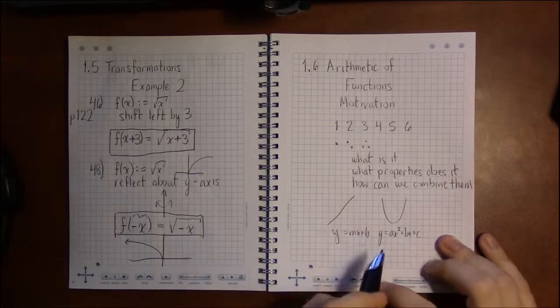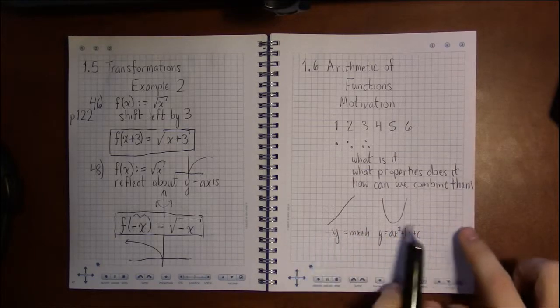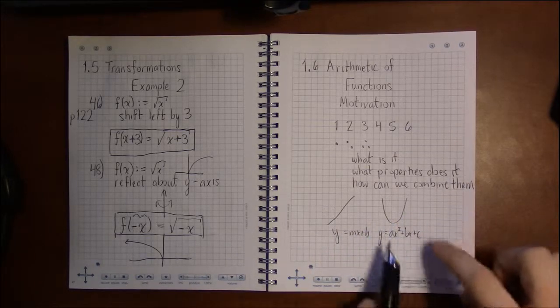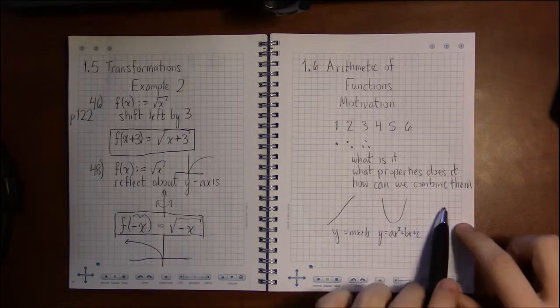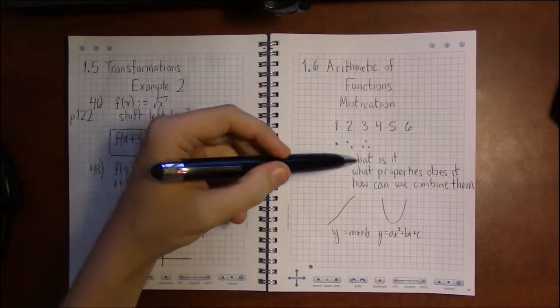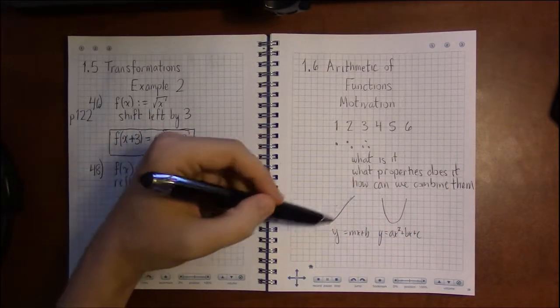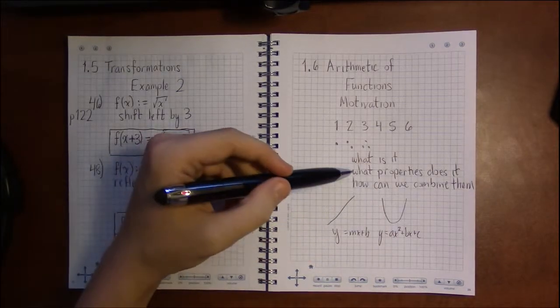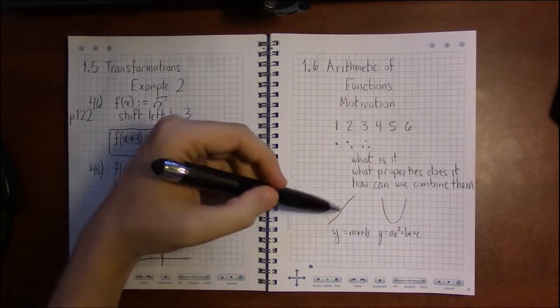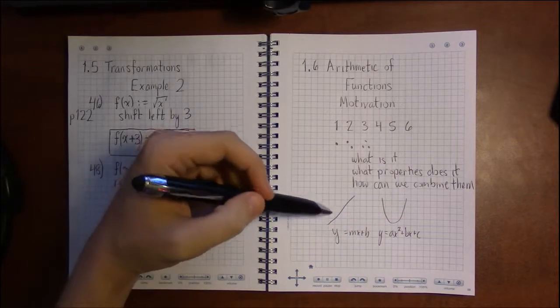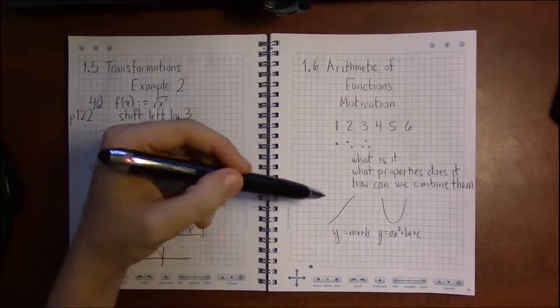And then in 1.4 and 1.5 we talked about a lot of different types of functions and how you can move them around and manipulate them. So we've been talking about what functions actually are, what properties do they have? When are they increasing? When are they decreasing? When is a function symmetric, even, odd?